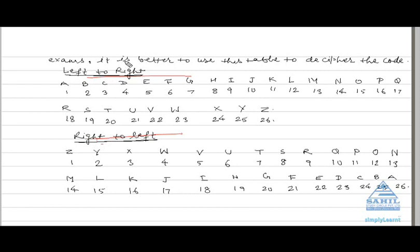First, we will discuss left to right: A B C D E F G H I J K L M N O P Q R S T U V W X Y Z. As we all know, there are 26 letters in the English alphabet.